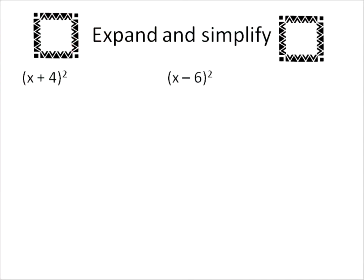The first thing we're going to do before we look at the perfect square trinomials is to see where they come from. Let's go ahead and expand some of these binomials. This first one we have x plus 4 squared. Remember, when we're doing that, we aren't just squaring the first term and squaring the last term. What we're doing, we're actually saying x plus 4 times x plus 4.